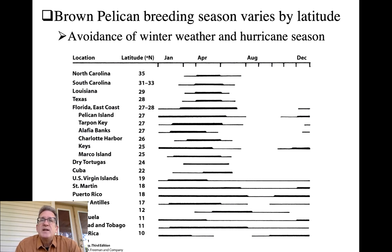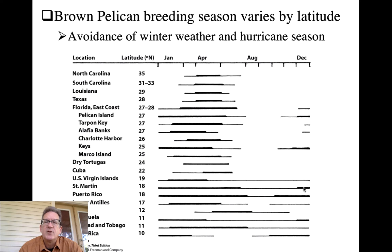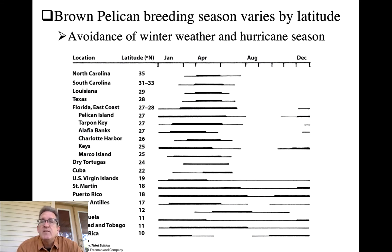Some species' breeding season varies across their geographic range. Brown pelicans in tropical areas where hurricanes aren't an issue can breed nearly year-round. However, farther north where severe hurricanes are more likely, birds avoid breeding during hurricane season, and at the most northern extent of their range they also skip the winter months.